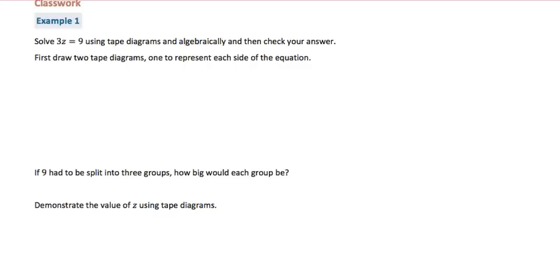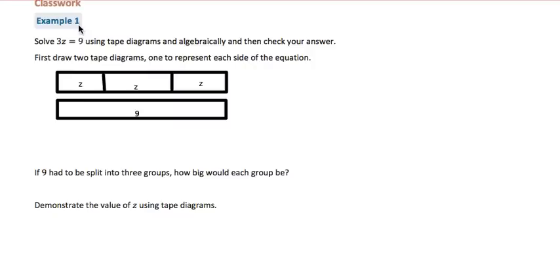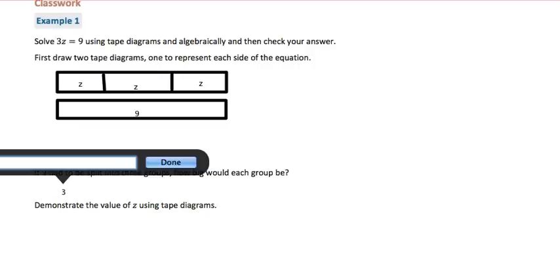First we'll draw two tape diagrams, one to represent each side of the equation. When we look at the two tape diagrams, I have 3z and I have 9. If 9 had to be split into three groups, how big would each group be? It would be 3.